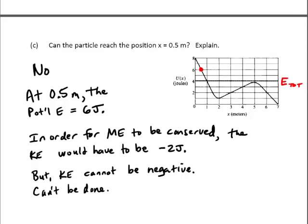Part C. Can the particle reach the position x equals 0.5 meters? Explain. At 0.5 meters, the potential energy is 6 joules. So no, we cannot have potential energy there. The reason is the total energy is 4 joules, and the only way you can conserve energy is if you had a kinetic energy equal to negative 2 joules, because 6 joules plus negative 2 joules would be 4 joules. Since kinetic energy cannot be negative, ever, this can't happen.